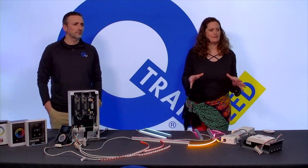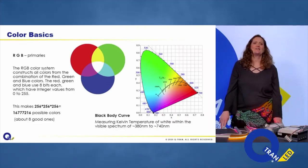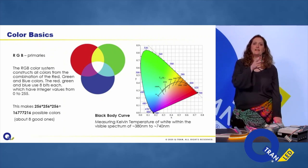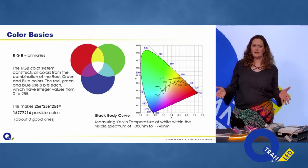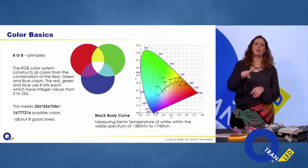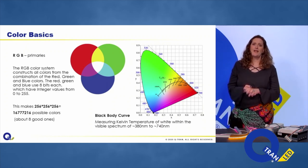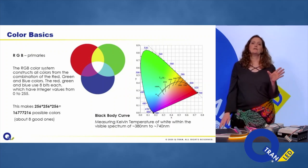Let's do a basics refresher on color. Everybody knows R, G, and B — those primaries make up all the colors in the world, over 16 million. Looking at our primary Venn diagram on the left and the CIE chart on the right, we're very familiar with the black body curve. We talk about where white lands on the curve, and today we're going to talk about the information around the CIE chart — nanometers and colors.